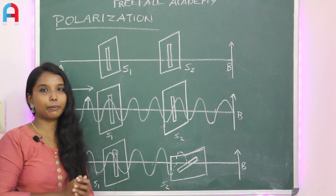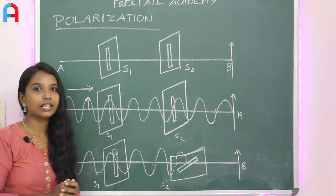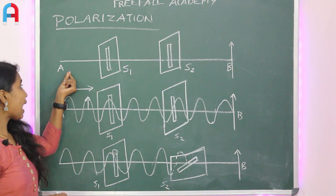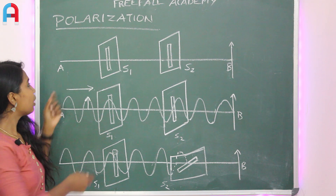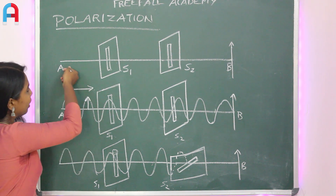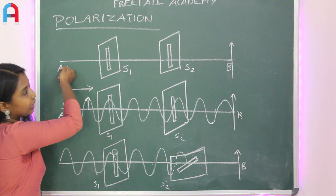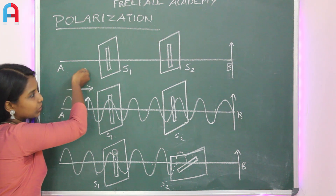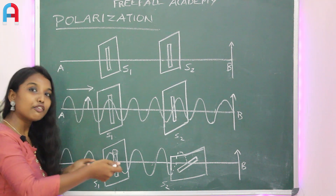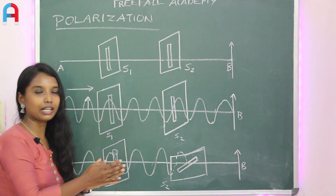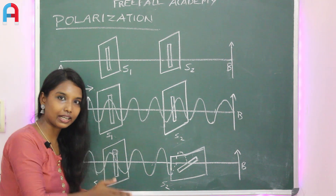So, we have to set up a longitudinal wave. At end A, we have to tighten the string. That is the forward and backward movement that we have to create in the string.